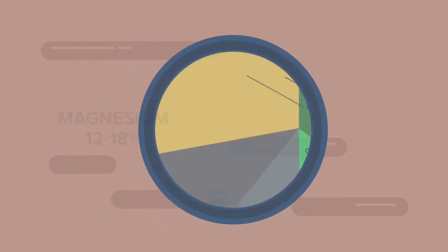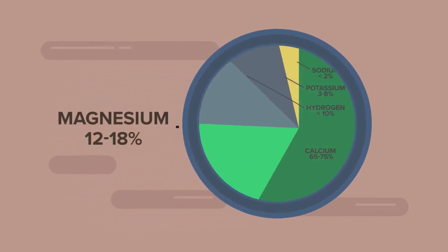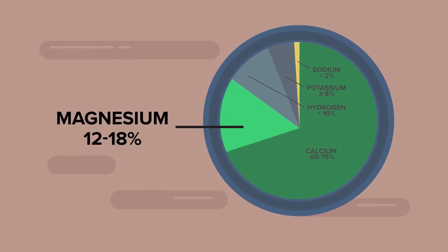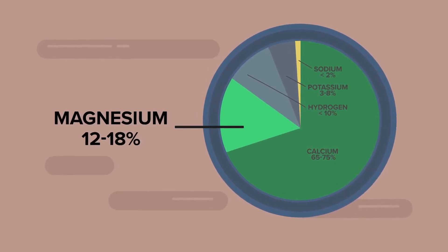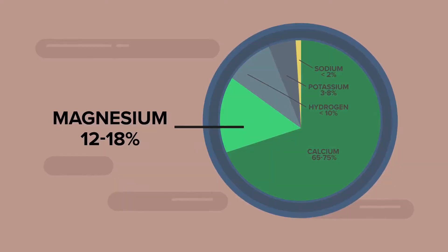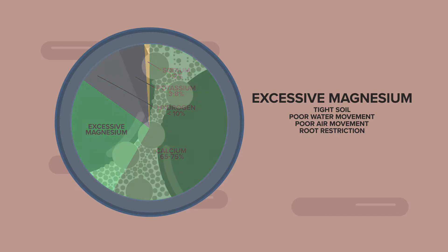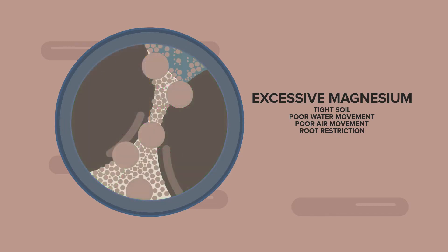Our ideal range for magnesium is going to be 12 to 18 percent, and keeping that in balance ensures we have enough nutritional components for crop uptake. If we've got soils that are high or elevated in magnesium, you have a tight soil — water doesn't move nor does air, and therefore we have more root restrictions.